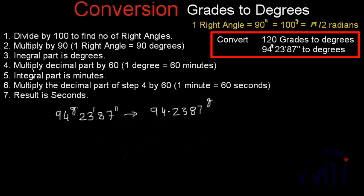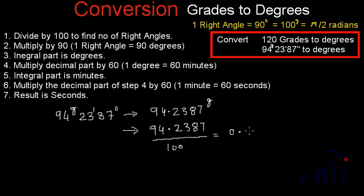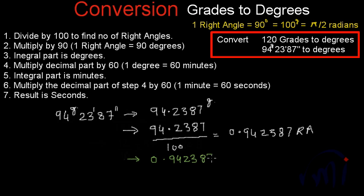Going back to the procedure: first we divide by 100, because 100 grades is equal to one right angle, and we want to find the number of right angles first. So 94.2387 divided by 100 gives 0.942387 right angles. Next, to convert to degrees we multiply by 90, because one right angle is equal to 90 degrees.